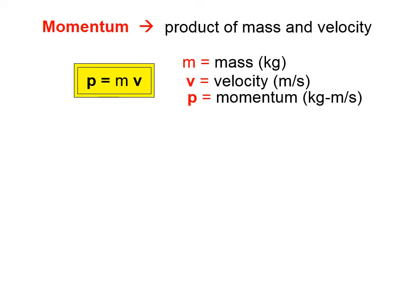Mass is measured in kilograms, velocity is in meters per second. So when you multiply those two units, you get this rather strange-sounding unit called the kilogram meter per second.